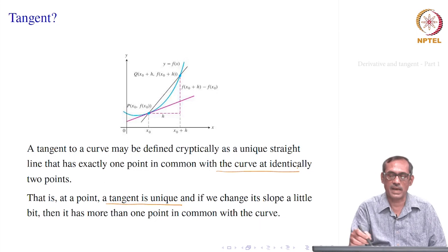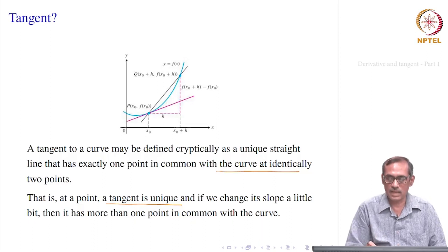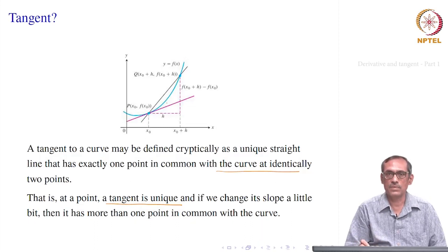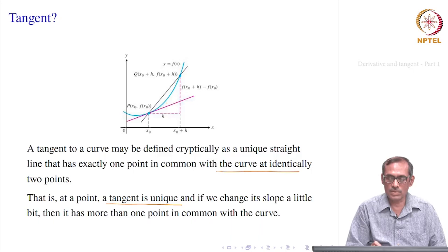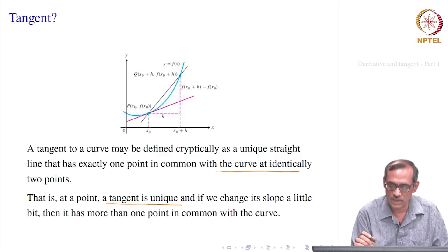If you change the slope slightly, it will become a secant — there will be at least two points common to the curve. So, for our definition, we take two points on the curve, say P and Q.